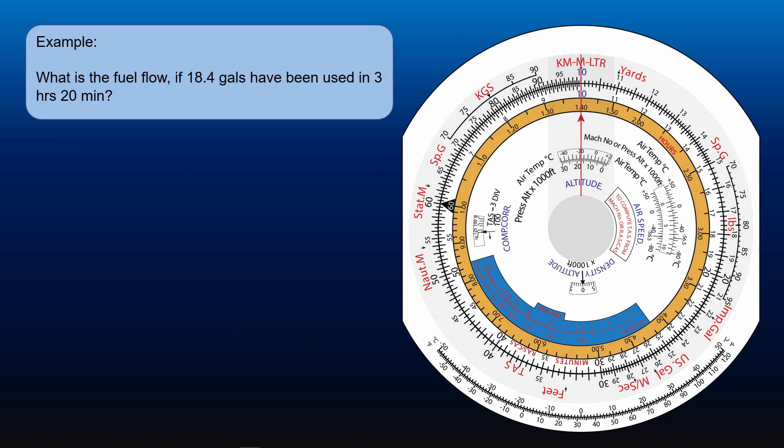We use an example once again to make the mode of operation clear. What is the fuel flow if 18.4 gallons have been used in 3 hours 20 minutes? To get the rough idea of the magnitude of the answer, round up 18.4 gallons to 18 gallons.